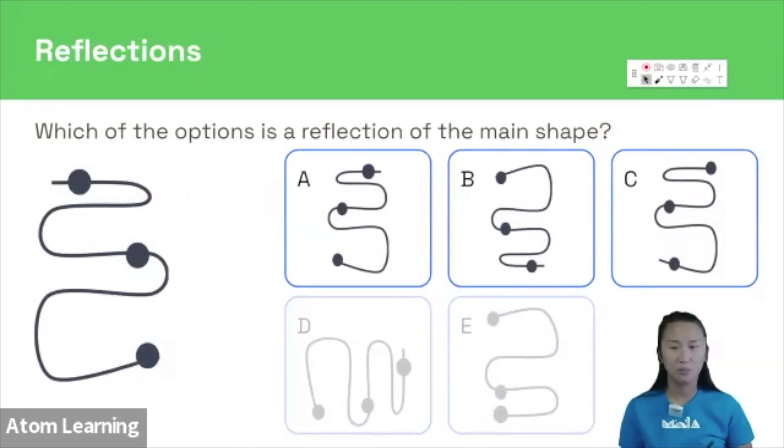Now, let's try and reflect our main shape in our heads. Option B might look like it could be a reflection, but it's actually 180 degrees rotation of the main shape. So watch out for that.